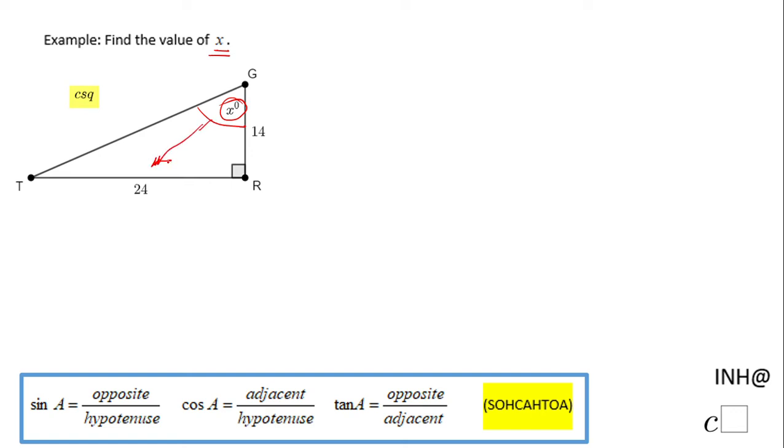...that this leg, this opposite leg in fact, is 24 and the adjacent leg is 14. So if we take a look, the only function from these three trigonometric ratios that contains opposite and adjacent is tangent. We notice here opposite and adjacent.